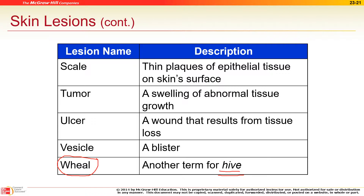The TB screening injected on your forearm should form a wheal after the injection. If no hive forms, then the injection wasn't successful.